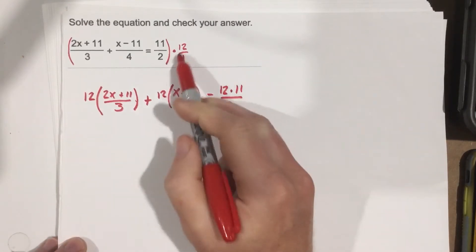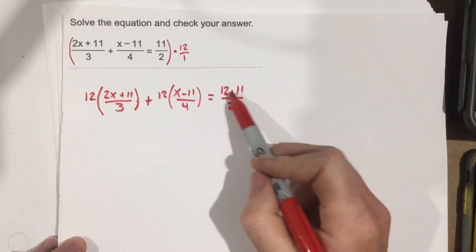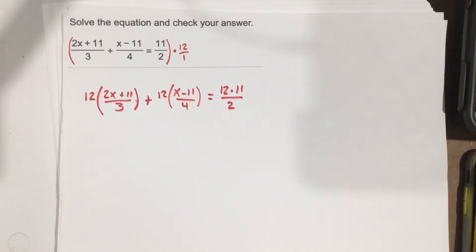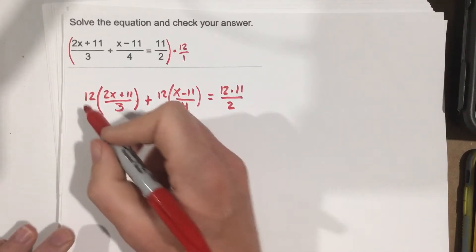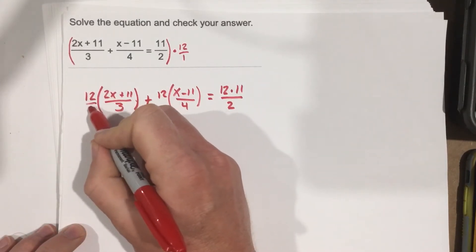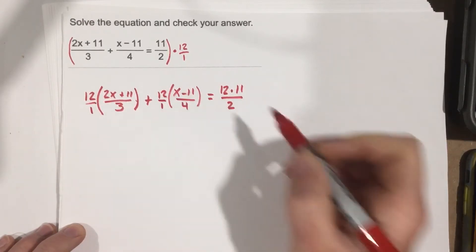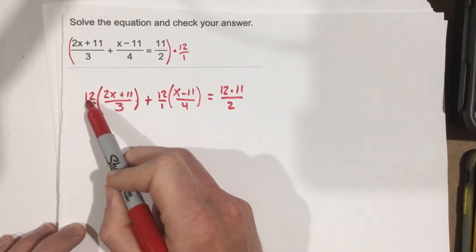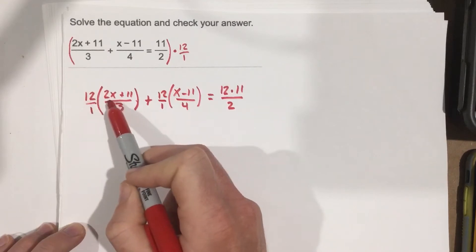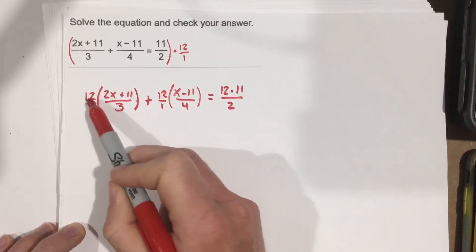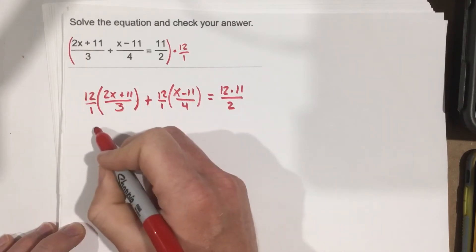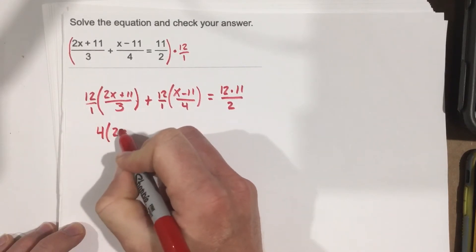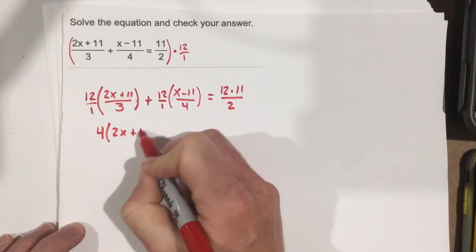You can see that 12/1 times 11/2 gives you 12 times 11/2. Now we can start to cross-cancel here. When we multiply the 12, you'll get a cross-cancellation of 12 and 3, because 12 divided by 3 is 4. So we end up with 4(2x+11).